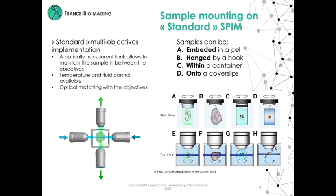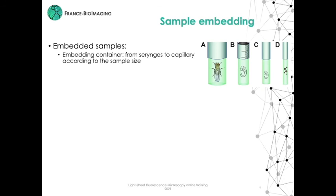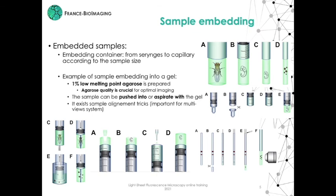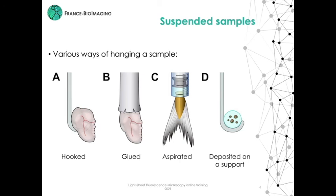Many embedding strategies exist that depend on sample size, motility, and requirements for keeping them alive. We can for example use syringes where the extremity is cut away, or capillaries, to create a tubular container in which the samples will be embedded in a gel according to the sample size. Various ways to embed the samples into the gel exist, from sample aspiration to the creation of a tiny hole inside the gel. An example of an embedding procedure is presented in the practical demonstration of the MuVi SPIM microscope. The most critical point is to avoid any refractive index mismatch between the embedding gel and the immersion media. Low-melting agarose is most often used because it has the same index of refraction as water. One also needs to be vigilant about the quality of gels used, as any dust or inhomogeneity will deteriorate the imaging quality.